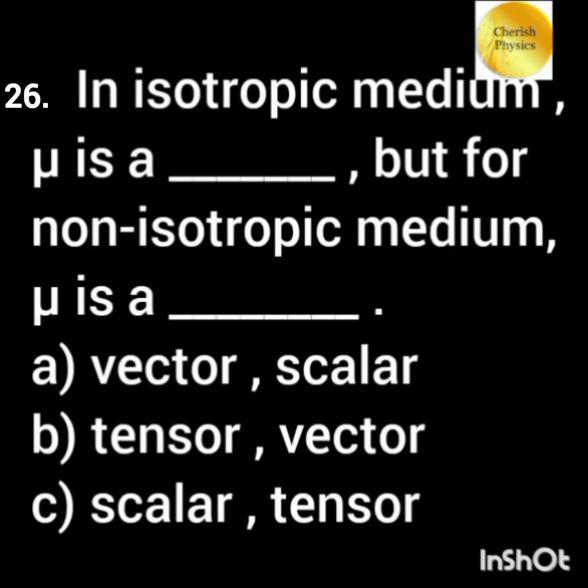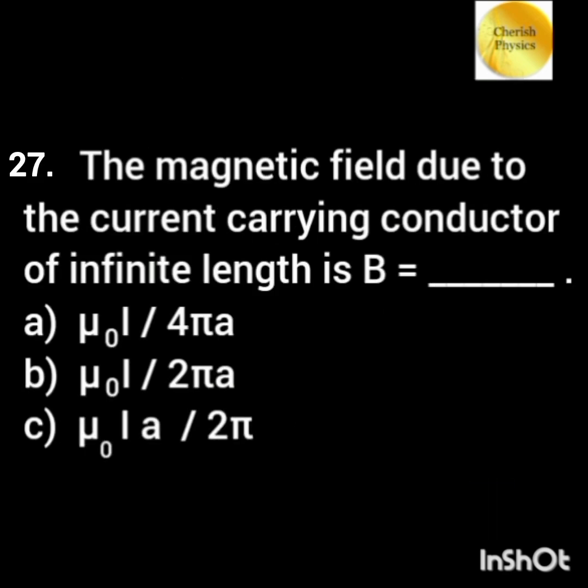In an isotropic medium, mu is a dash, but for a non-isotropic medium, mu is a dash. The magnetic field due to a current-carrying conductor of infinite length is dash.